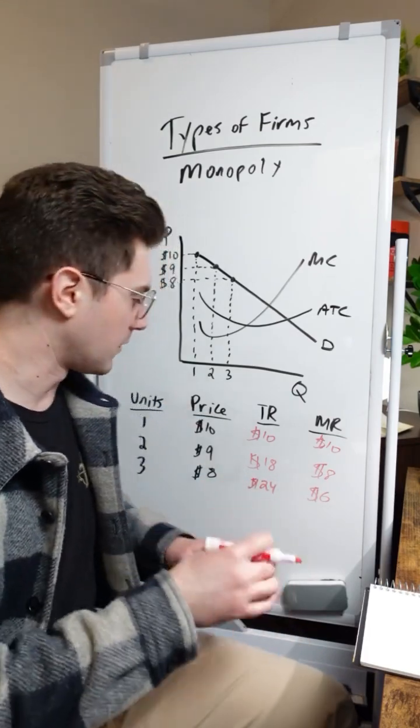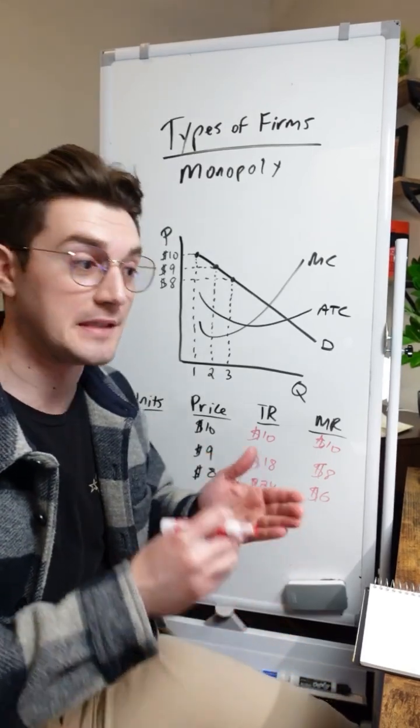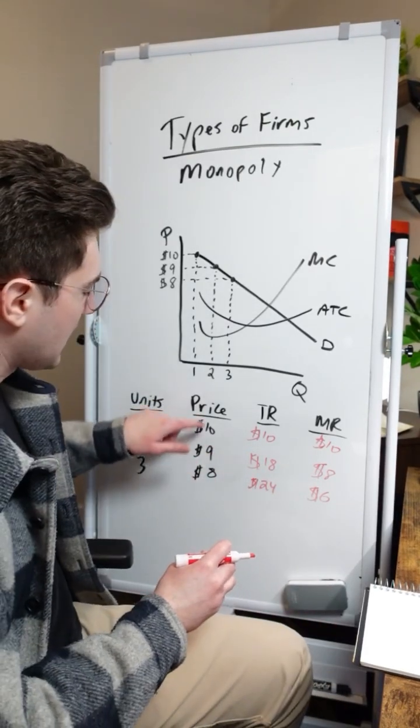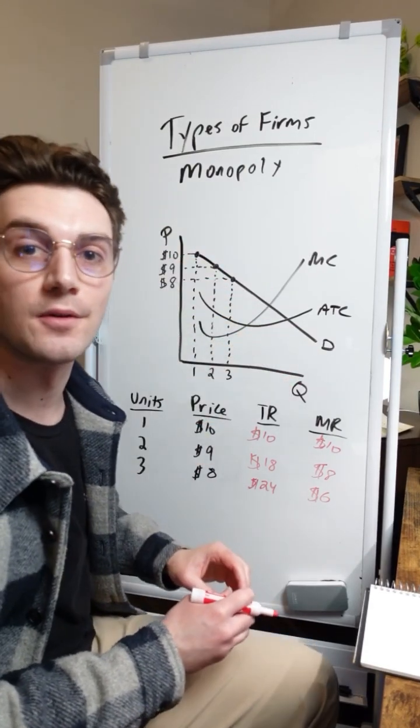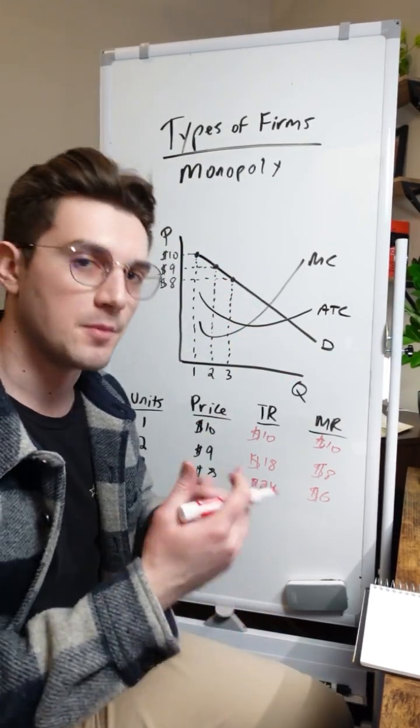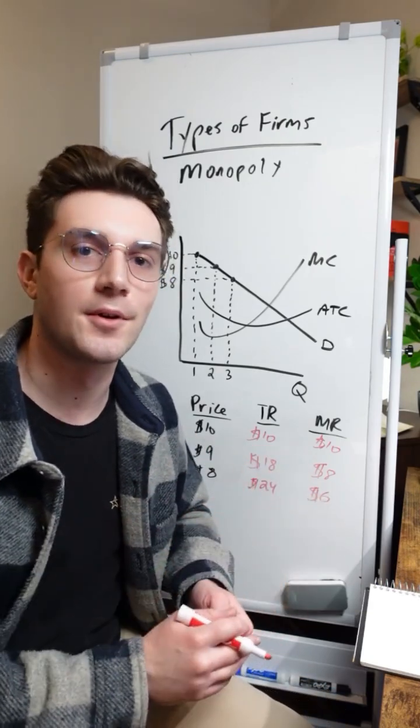This is completely different than what we did with perfectly competitive firms because at all of these units, the perfectly competitive firm would just be selling at the market price. They don't have this power right here to sell at the price corresponding to the demand curve because they're price takers. But with monopolies, we have that power because of product differentiation. We're the only firm selling the good in the market.